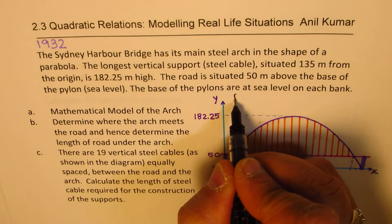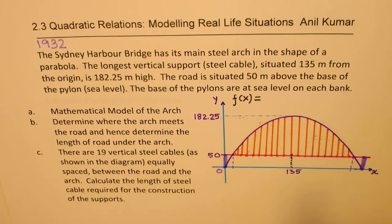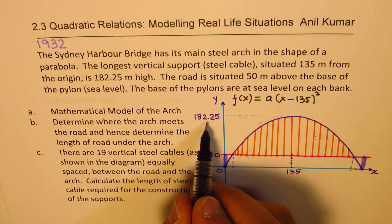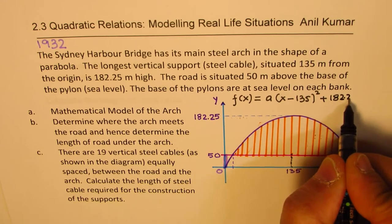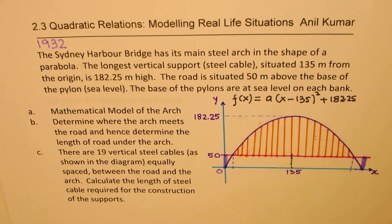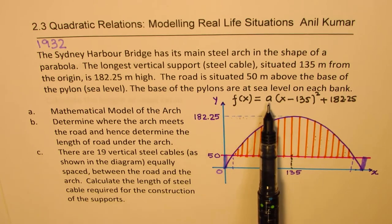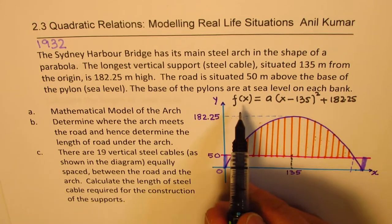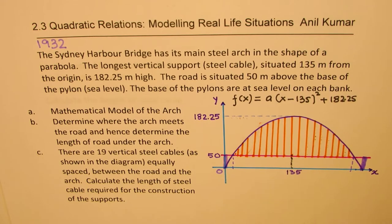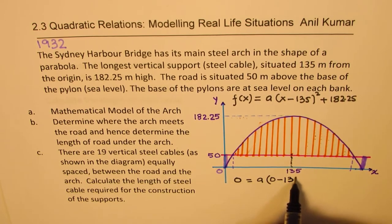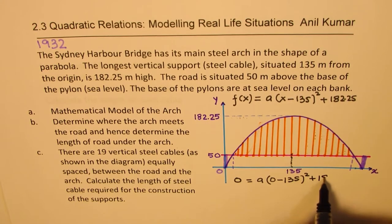Any form could be used for writing down the equation. Let me use vertex form: f(x) = a(x minus h)² + k. At a distance of 135 from the origin, we have a maximum height of 182.25. So the vertex is (135, 182.25). Now we need to find the value of 'a' by substituting the origin point (0, 0).